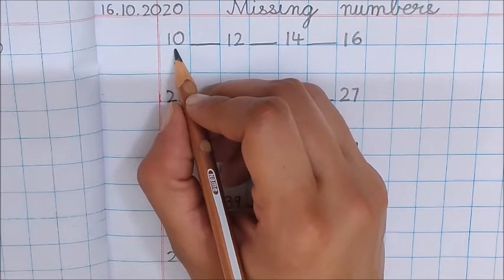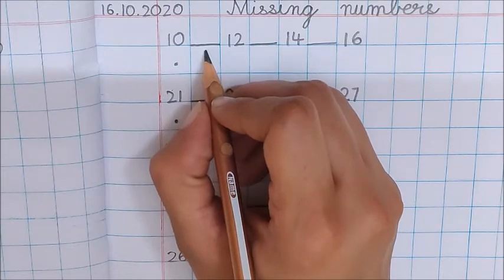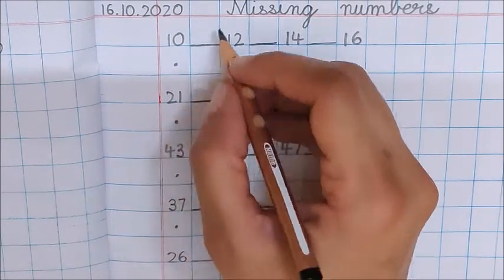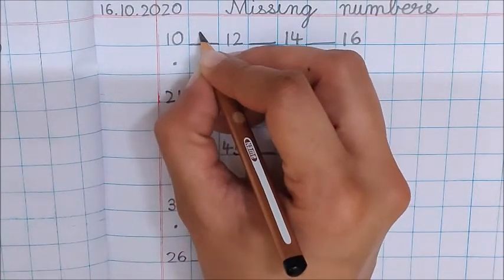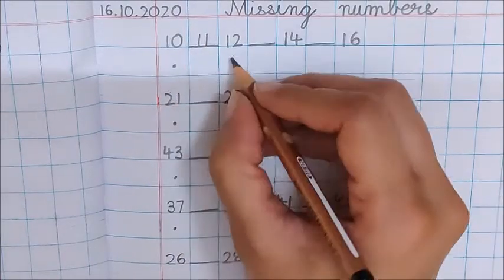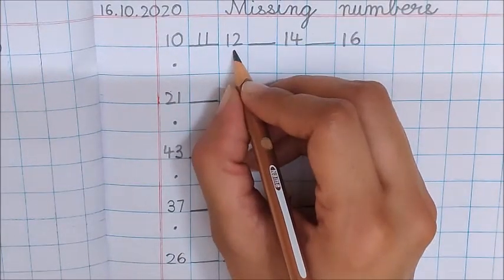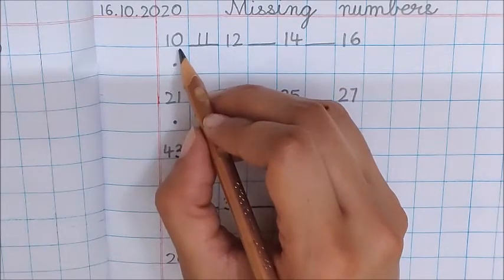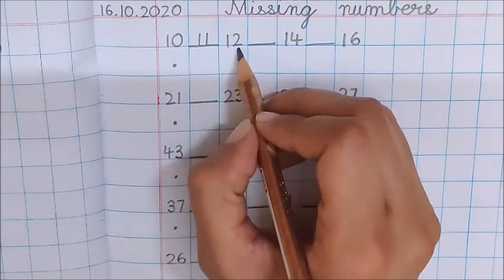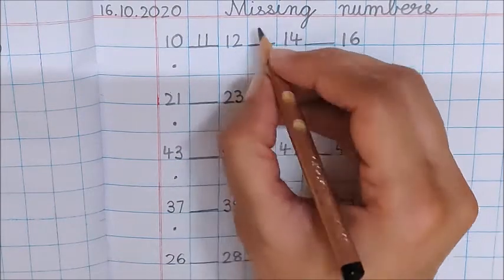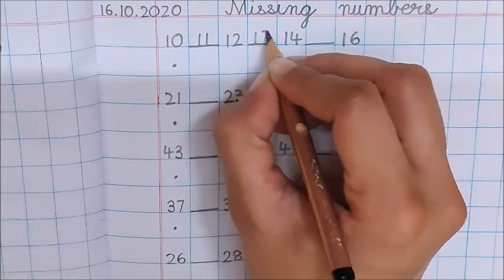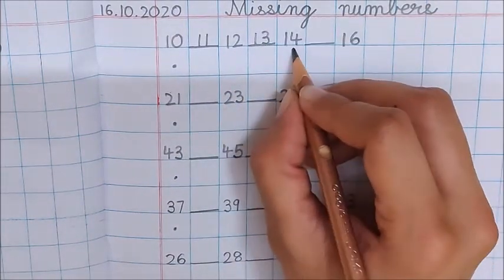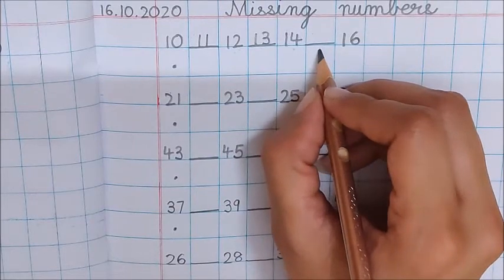What is here? 10. What comes after 10 children? Correct, 11. So write down here 11. Then 12. What comes after 12 children? Check from the beginning. 10, 11, 12, 13. Very good. Then 14.